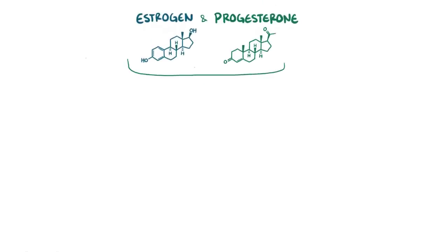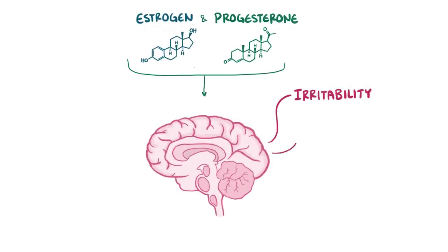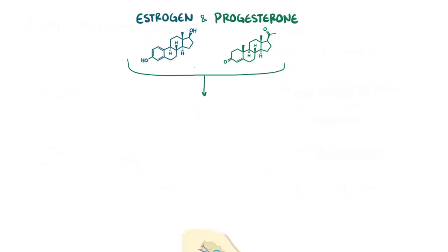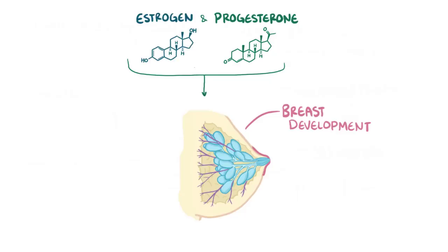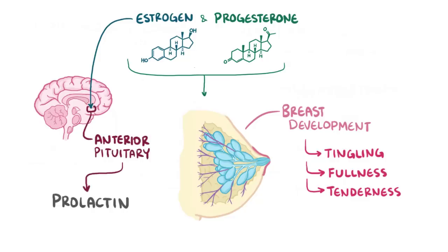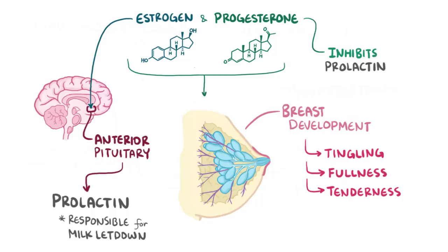High levels of estrogen and progesterone can also affect mood, ranging from mild irritability to severe anxiety and depression, all of which can be very unexpected and disconcerting. Many women also describe mental fogginess or decreased ability to concentrate, which may be related to hormonal changes or general fatigue and sleep deprivation. During the pregnancy, estrogen and progesterone promote breast development and the milk-producing machinery. Increased blood flow to the breasts and building of breast tissue may cause symptoms like tingling, fullness, and tenderness. Estrogen also stimulates the anterior pituitary to produce prolactin, a hormone responsible for milk production and letdown, though high levels of progesterone during pregnancy inhibit prolactin's milk letdown effect until the baby is born and estrogen and progesterone levels fall.